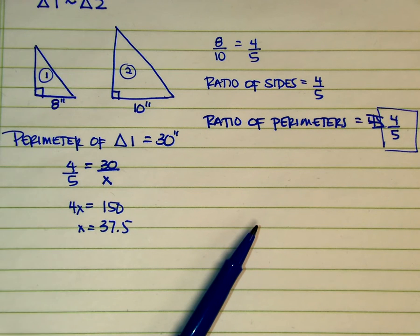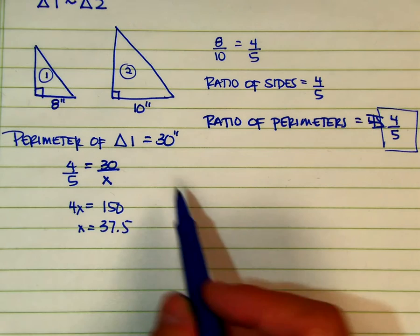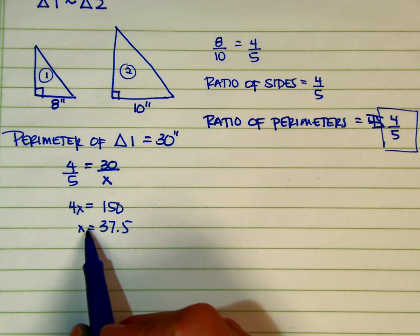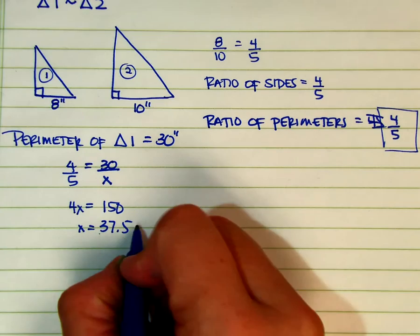Okay, so technical difficulty. If I divide 150 divided by 4, I get a perimeter of 37.5, and that would be inches.